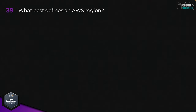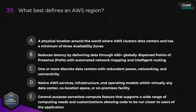Question thirty-nine: what best defines an AWS region? Options are: A, a physical location around the world where AWS clusters its data centers and has a minimum of three availability zones; B, it reduces latency by delivering data through over 450 globally dispersed points of presence with automated network mapping and intelligent routing; C, one or more discrete data centers with redundant power, networking, and connectivity; D, native AWS services, infrastructure, and operating models within virtually any data center, co-location space, or on-premises facility; or E, general-purpose serverless compute feature allowing code to run closer to users. The correct answer is A, a physical location around the world where AWS clusters data centers and has a minimum of three availability zones within it.